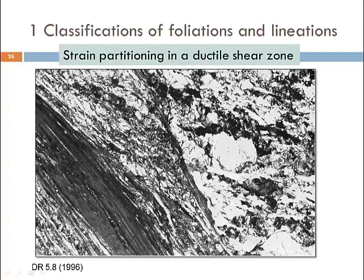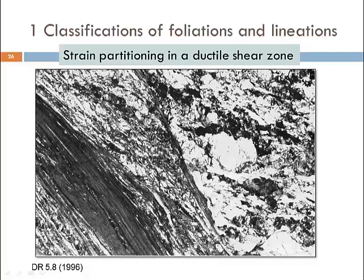Here we see a mylonite zone with various degrees of deformation. On the right-hand side is a granitic rock showing evidence of brittle deformation — brittle offsets in clasts and a weakly forming foliation. Towards the left, we see a very intense foliation and strong stretching of individual grains — this would be the mylonite. The right side represents the host rock, which has seen some deformation but much less than the ultramylonite.